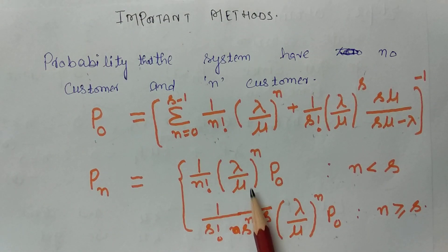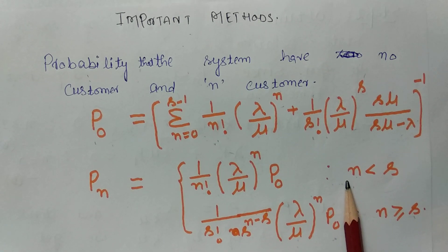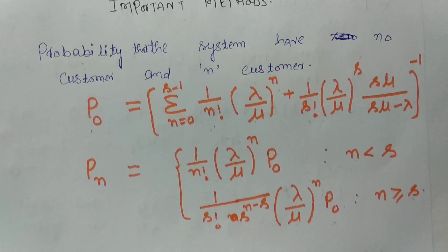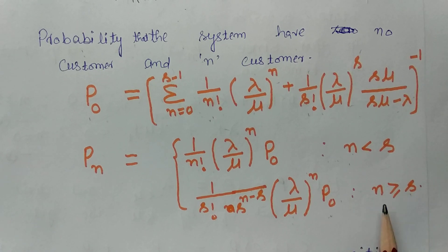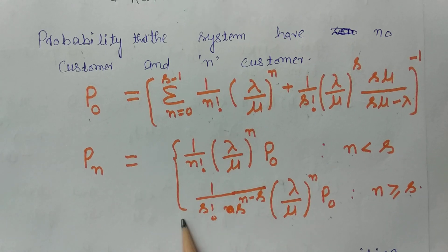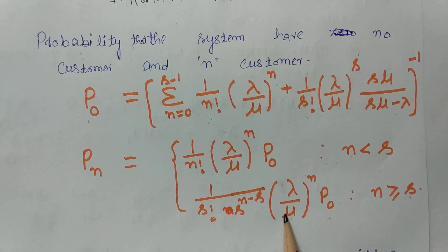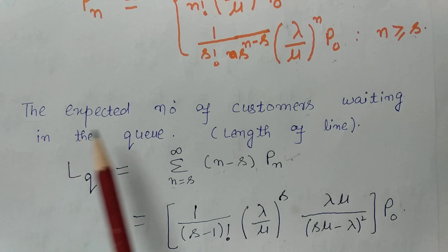The probability of n customers in the system is: (1/n!) times (λ/μ)^n times P0, when the number of customers n is strictly less than the number of servers s. When n is greater than or equal to s, the probability of n customers is (1/(s! · s^(n−s))) times (λ/μ)^n times P0.